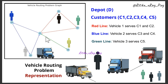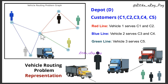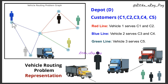In the graph representation, nodes represent the depot and customer locations, while edges represent the possible paths between nodes. Edges are often labeled with costs such as distance or time. For example, depot D is connected to customers C1 and C5. Different colored edges represent routes for different vehicles — the red edge means vehicle one serves customers C1 and C2, the blue edge means vehicle two serves customers C3 and C4, and the green edge means vehicle three serves customer C5.